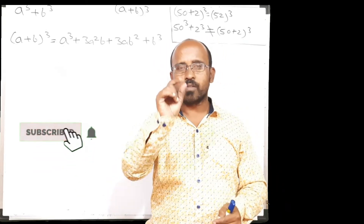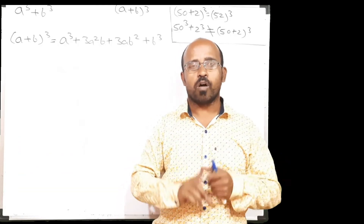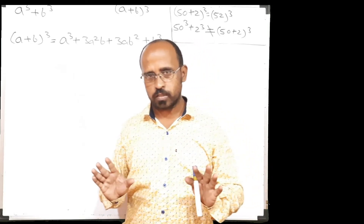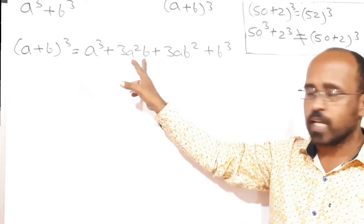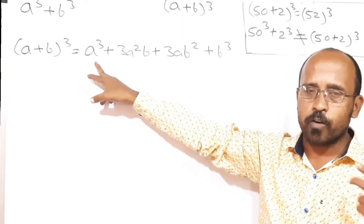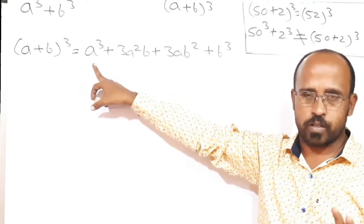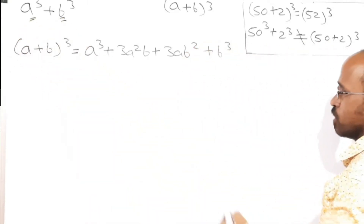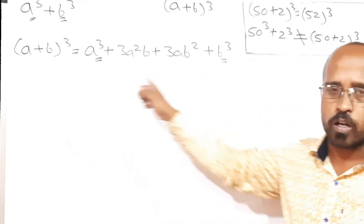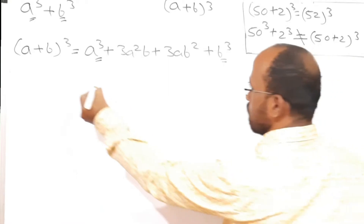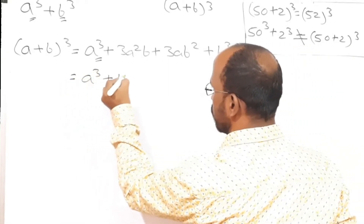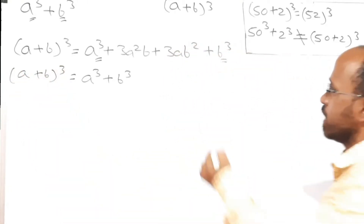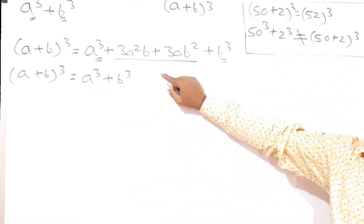We are solving the problem of factorization. We have to solve the problem of factorization. It is possible to find out common between at least two terms. Between a cube and plus 3a squared b, it is possible to find out a common. But if we take a common, this a cube will reduce into a square, which we don't want. We want this a cube plus b cube in the final answer. So we will keep this a cube plus b cube intact and will not make any changes in it. We can find out common between the remaining terms, which are plus 3a squared b plus 3ab squared.